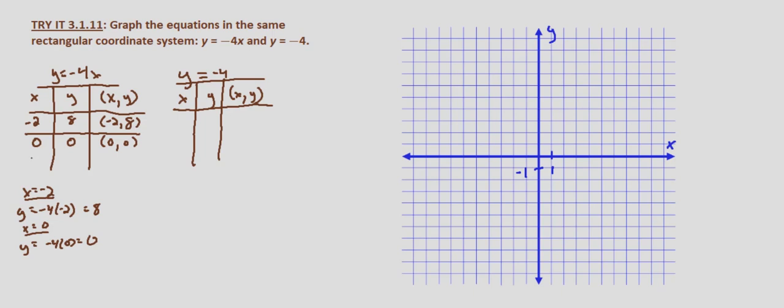Now let's say x equals 2. If x equals 2, we have y equals negative 4 times 2, which equals negative 8. So we end up with the point (2, negative 8).